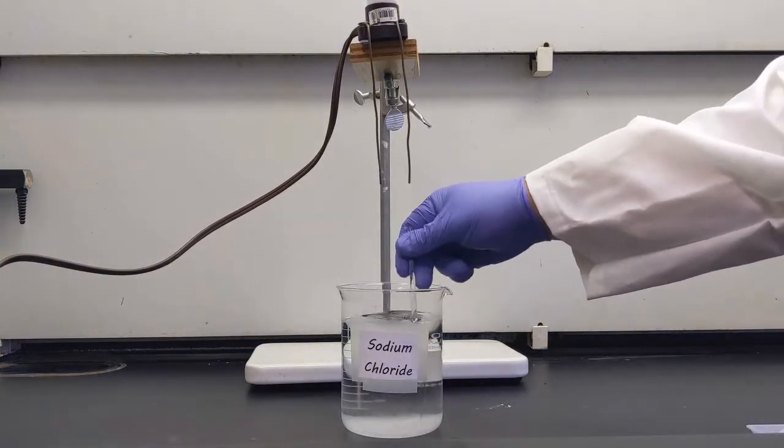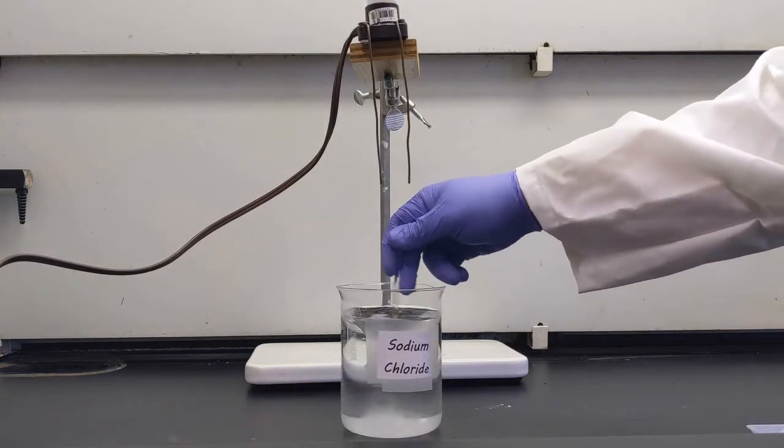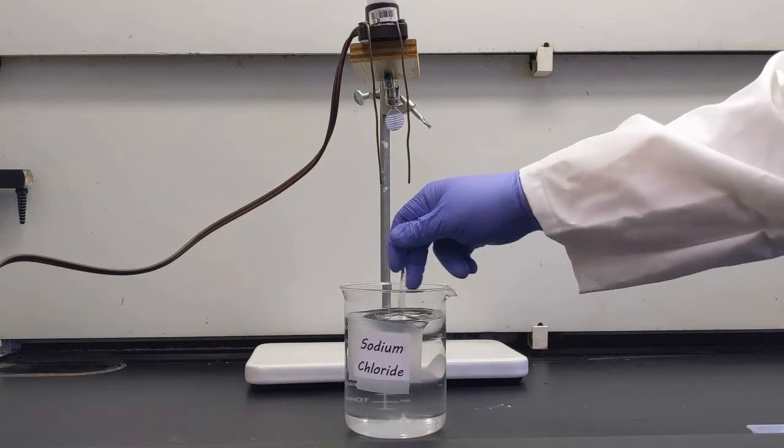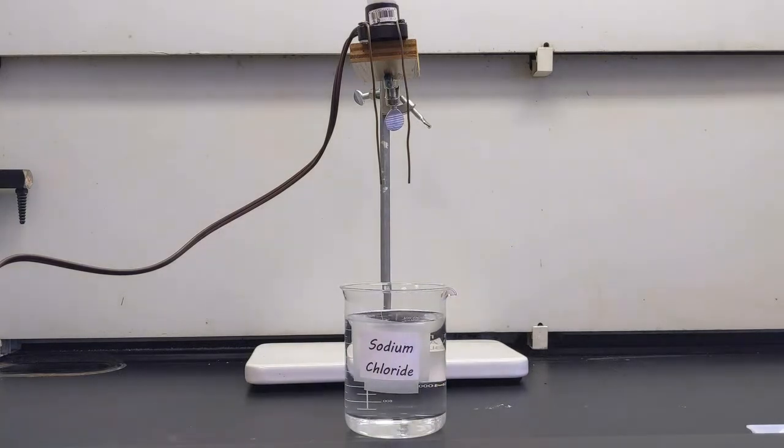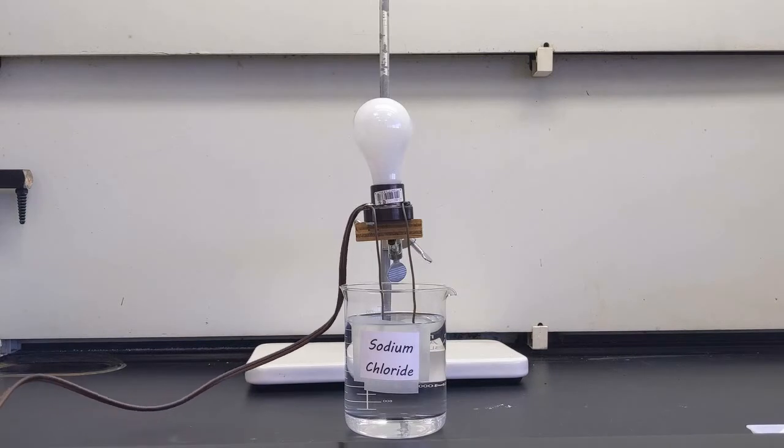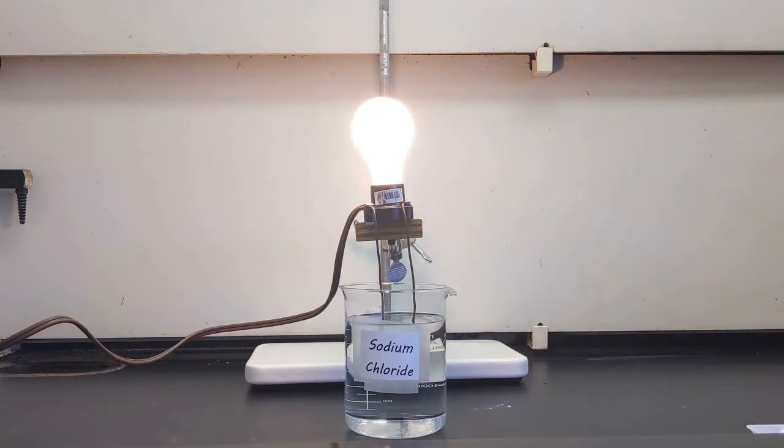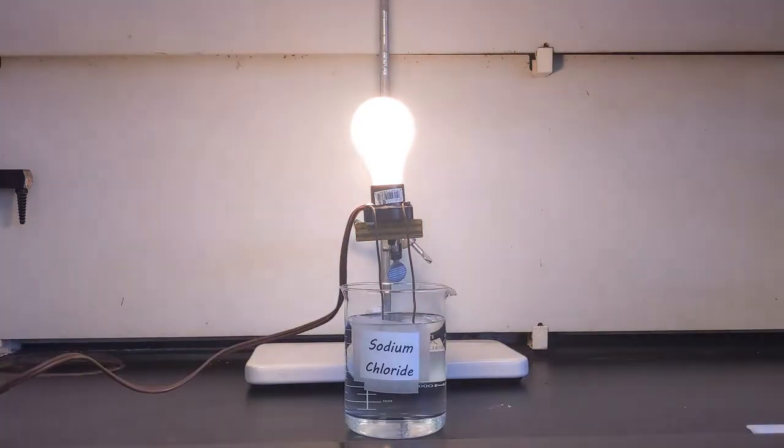Now we'll look at sodium chloride, and we'll stir it in and dissolve it. It takes a little bit of time to dissolve the sodium chloride. Now that it's getting dissolved, we'll lower our light bulb in, and we will plug our light bulb in. If it conducts, the light comes on, like you see here. So sodium chloride will conduct when we dissolve it into solution.